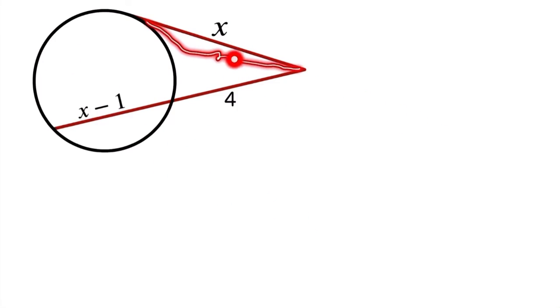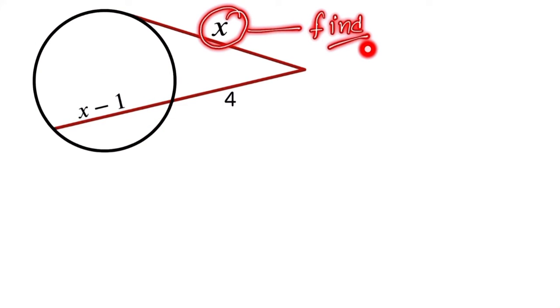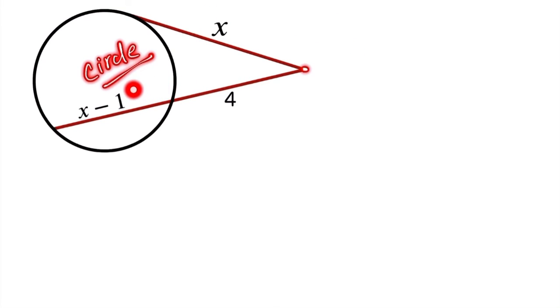This is our question. This length is x, this length is 4, and this length is x minus 1. We have to find the value of x. How can we find it? We have a circle and an external point P.